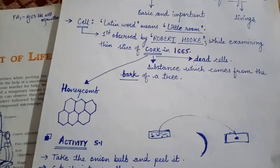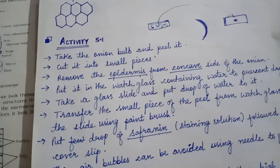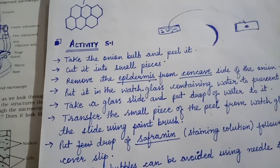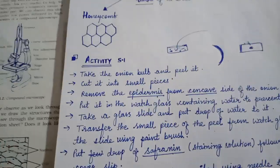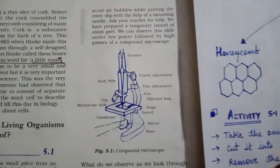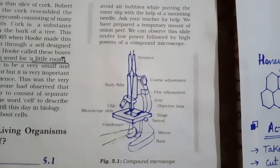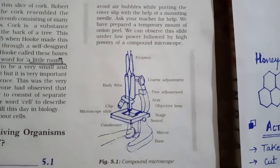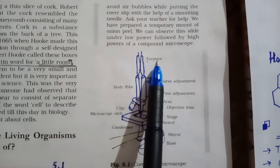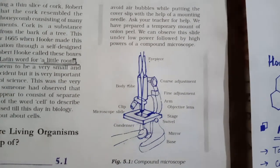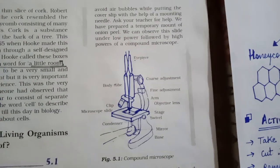Next, before we proceed to the activity, that is activity describing the cells of onion peel, we will just take an overview that our microscope, basically simple or compound microscope ka structure kya hota hai. There is an eyepiece. Eyepiece naam kyun hai iska? It is a structure of compound microscope. Eyepiece, that is near eye to observe.